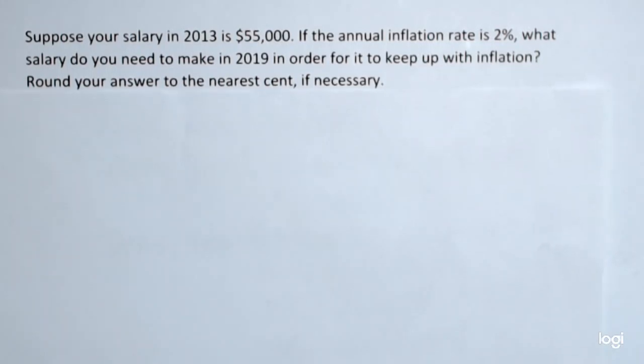I'm going to work through it with a few steps, and then we'll see the pattern. Then I'll go back and use the compound interest formula. The starting point is year 2013, and I'll call that year zero, or year sub-zero, and that is $55,000.